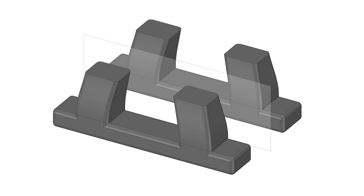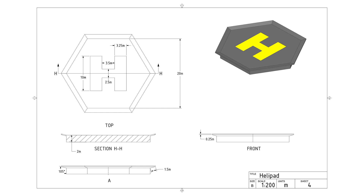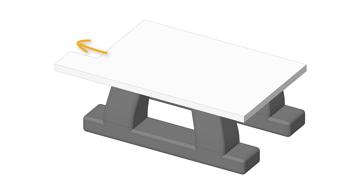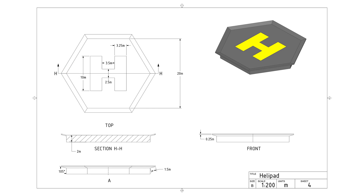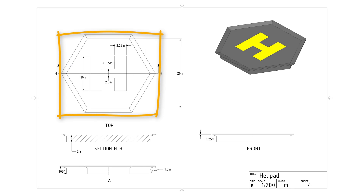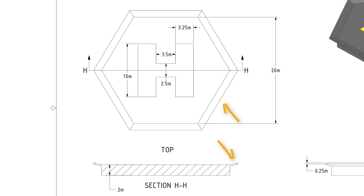Once our base structure is built, we can move to creating the helipad. First, we can extend the base so that it could support the helipad, simply adding a protrusion. Then we create the bridge that holds the helipad with a simple pull operation. And last, we create the helipad using a hexagonal shape as the base for the prism. Then we can use a simple sketch and pull it along the perimeter of the helipad to create the safety protrusions.